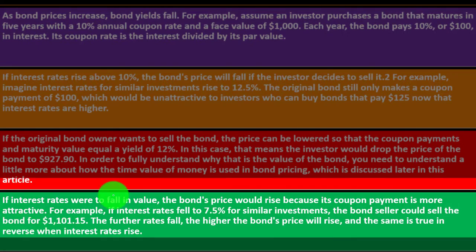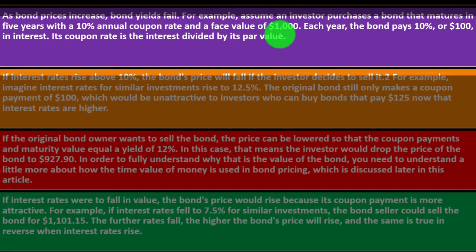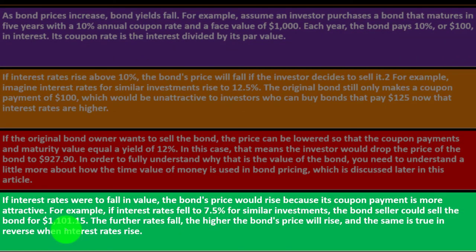You get the idea that you could sell the bond for over $1,000 when rates fall. Where does that $1,101.15 come from? That requires a time value of money calculation. The further rates fall, the higher the bond's price will rise, and the same is true in reverse when interest rates rise.